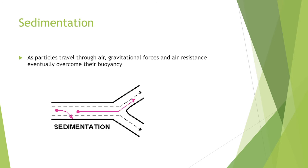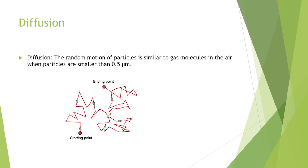Sedimentation: as particles travel through air, gravitational forces and air resistance eventually overcome their buoyancy — the tendency for a particle to stay up in the air. Just as outside the body, there is gravity inside, and most large particles will eventually settle onto a bronchus or somewhere in the respiratory system without reaching the deeper areas. This type of deposition is most common in the bronchi, and sedimentation is not an important factor when the aerodynamic diameter of the particle is less than 0.5 micrometers.